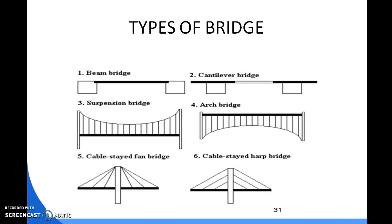Cable-stayed bridges are similar to suspension bridges and also use cables, but they are different. They have fewer cables, and the towers that hold the cables are much taller. Bridges can also be fixed or movable. A fixed bridge stays in place from the moment it is built until it fails or is demolished.